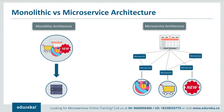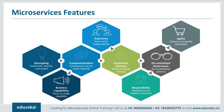In short, monolithic architecture had a single framework for all features on a single database, whereas microservice architecture has different microservices for each feature handling their own database. The features that made developers shift to microservices include: applications that are easily built, altered, and scaled; a focus on a single capability; easily replaceable components; independently working teams; frequent software releases; applications treated as products; no standardized patterns; and all features being quickly developed.